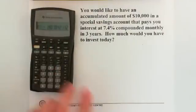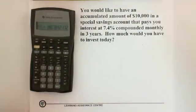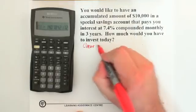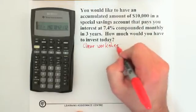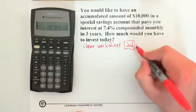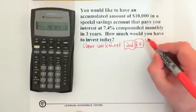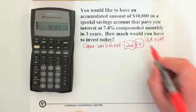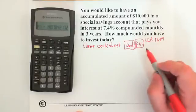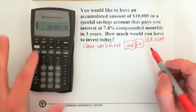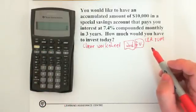Let's try one more problem. To clear the worksheet so all buttons are reset, go to second function FV. Above FV it says CLR TVM — clear time value of money worksheet. Press second FV and all these buttons are set to zero.